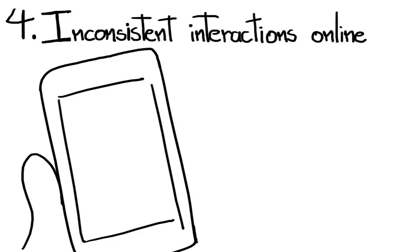Four: Inconsistent interactions online. An ambivert might stay up to talk to you until 5 a.m. one day, and then proceed to completely disappear from social media the next.